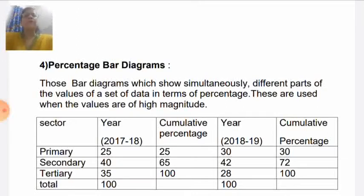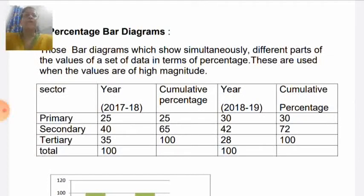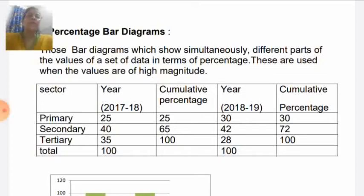For example, in this illustration, the sectors of the economy and their contribution to GDP are given. In 2017–18, the primary sector's contribution in GDP is 25 percent, secondary is 40 percent, and tertiary is 35 percent. Similarly, 2018–19 data is given in percentage. First, we change the simple percentages into cumulative percentages so that it is easy to make the bar chart.